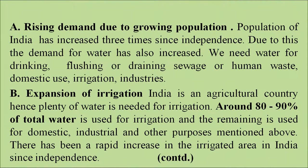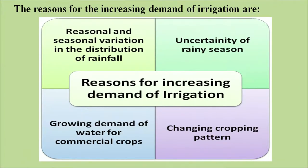We need water for drinking, flushing our waste, for domestic use, as well as for irrigation and industries. Second, expansion of irrigation. India is an agricultural country, hence plenty of water is needed for irrigation. Around 80 to 90 percent of the total water is used for irrigation and the remaining is used for domestic, industrial and other purposes. There has been a rapid increase in the irrigated area of India since independence. Reasons for increasing demand include: uncertainty of rainy season, changing cropping patterns, growing demand for water for commercial crops, and regional and seasonal variation in distribution of rainfall.